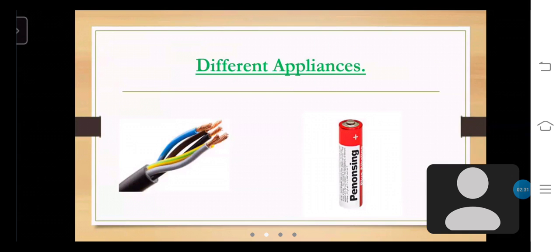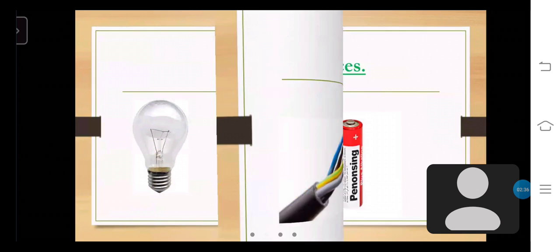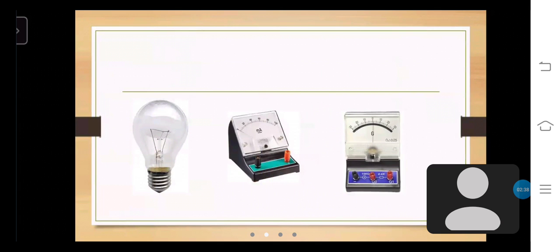Different appliances: It requires dry cells, bulbs, ammeter, and galvanometer.